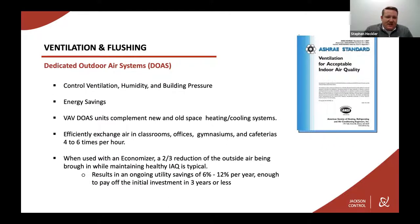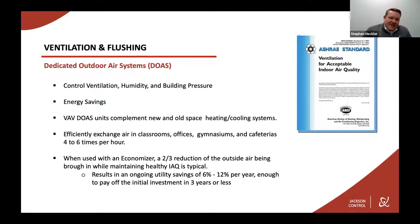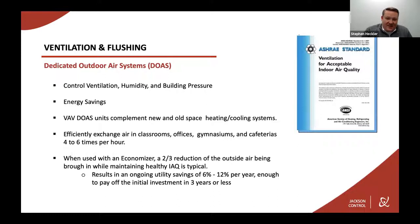Jackson Control is now carrying DOAS, and they can help with controlling ventilation, humidity, and building pressure. There is energy savings to be had, and whenever you have an economizer, you'll see a reduction of outside air being brought in when you can. Now looking at IAQ, you're still going to recognize an ongoing savings of 6% to 12% per year. If you're replacing a standard package unit with a DOAS unit with an IAQ sequence, you can pay off the initial investment in three years or less. We have tools to show that analysis.